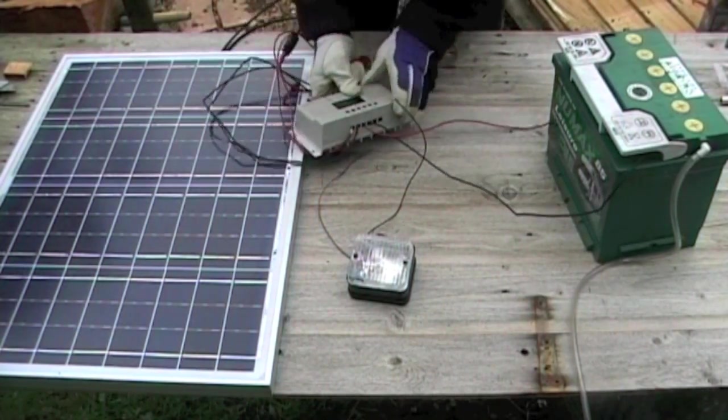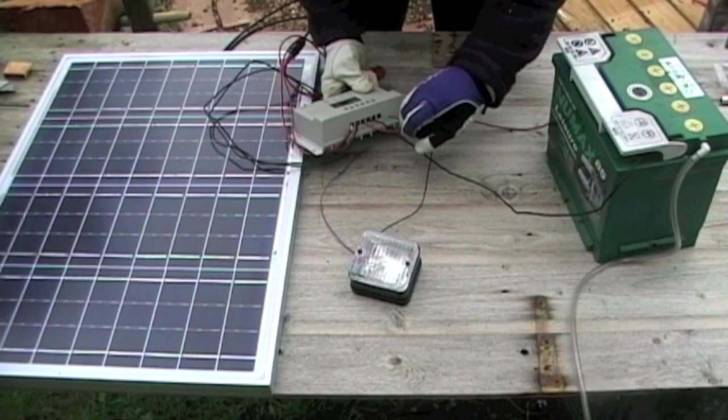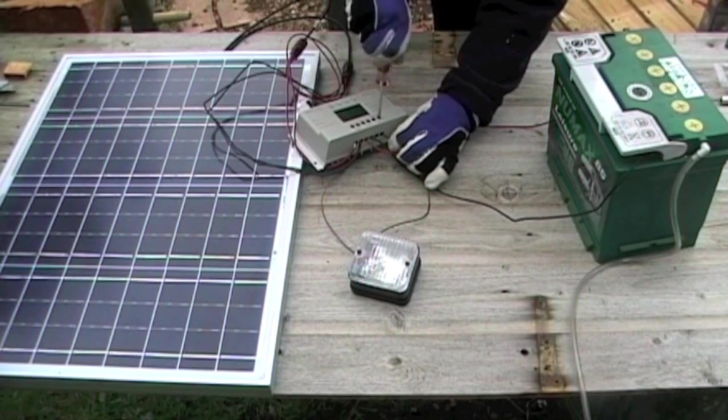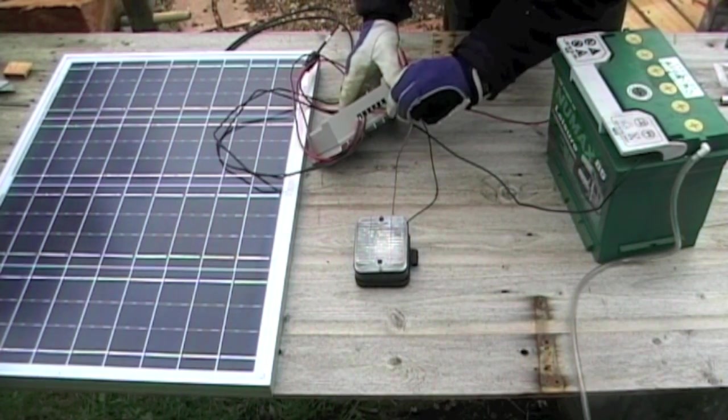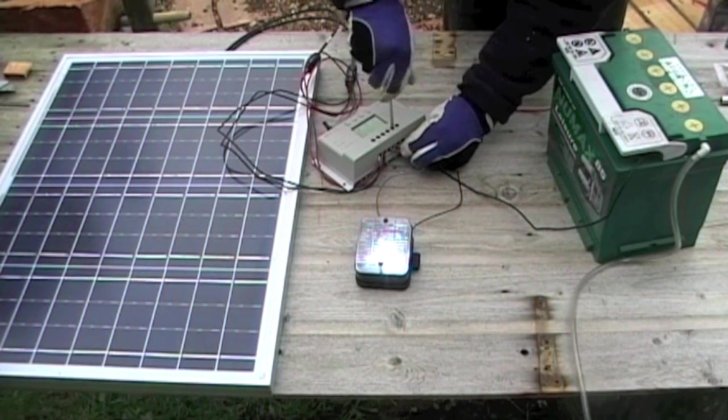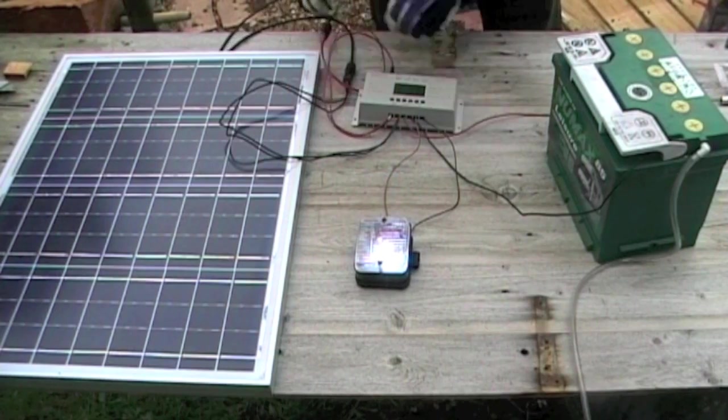To connect it up, again, there's just two wires to connect. Negative first, then tighten it up. Then as soon as I connect the positive, the light should come on. Yes. I'll just tighten this up. And get these wires out of the way.